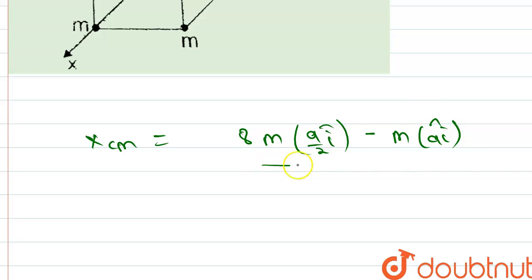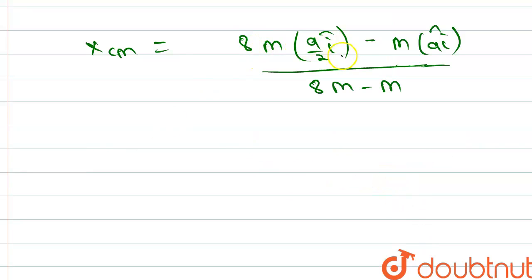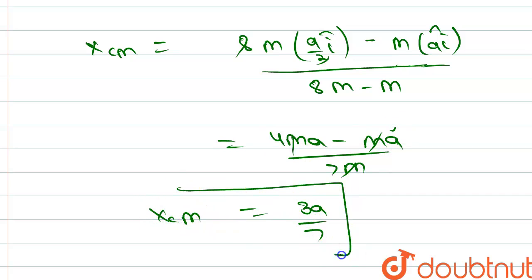From here we can see that 4ma minus ma upon 7m. The m cancels out, which equals 3a/7. So the x-coordinate of the center of mass of the body is at 3a/7.